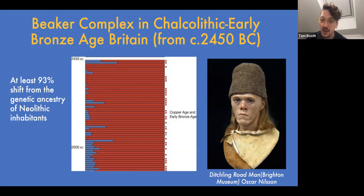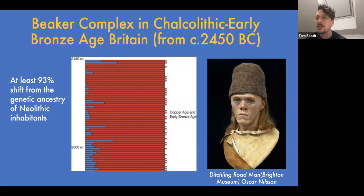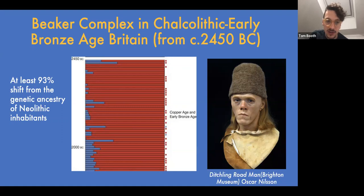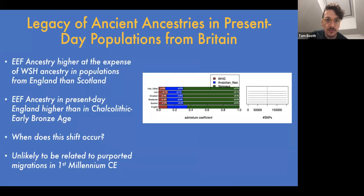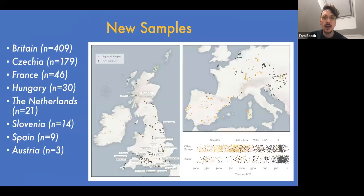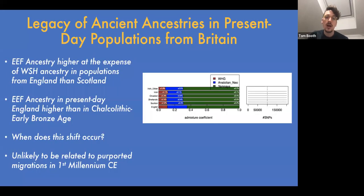It is likely that the migrations bringing this steppe ancestry into Britain were primarily coming from the lower Rhine valley, somewhere around present-day Netherlands.